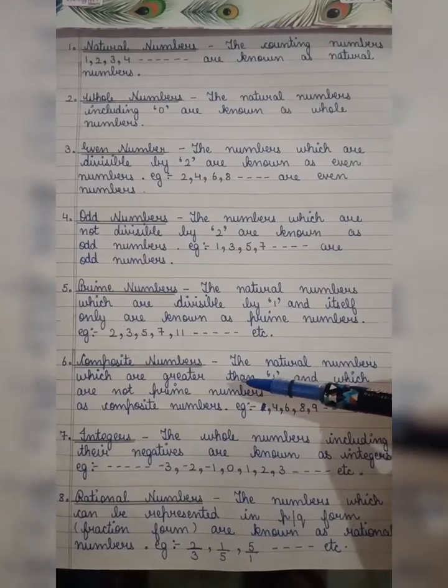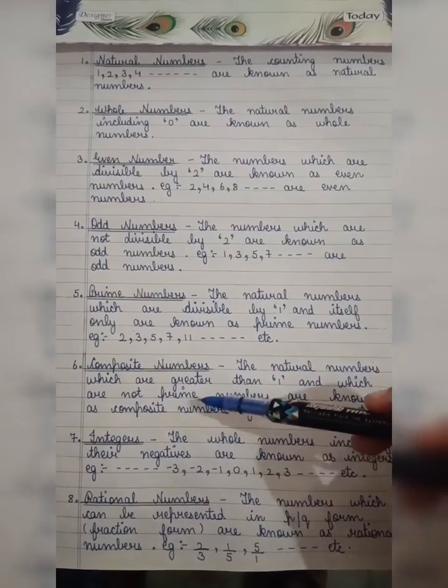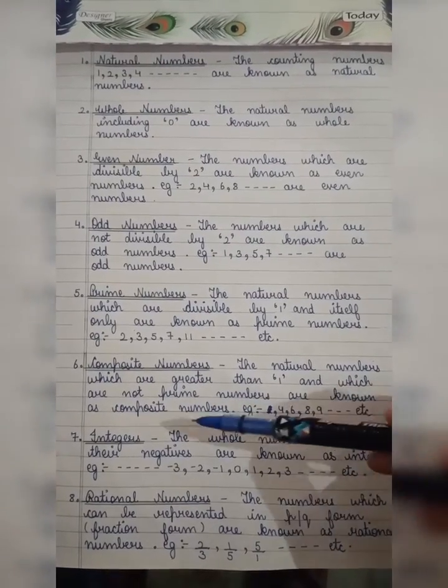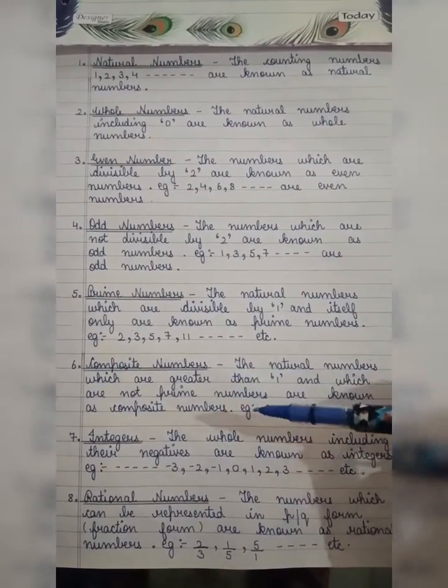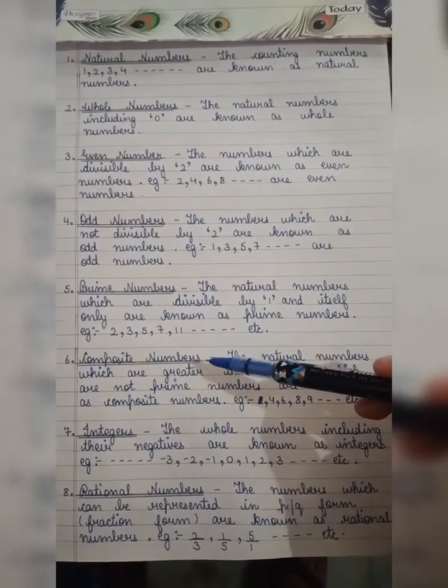Composite numbers - the natural numbers which are greater than 1 and which are not prime numbers are known as composite numbers. Or, we can say that all even numbers except 2 are composite numbers.